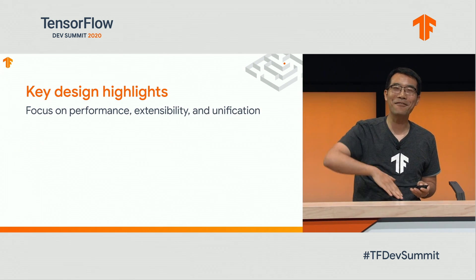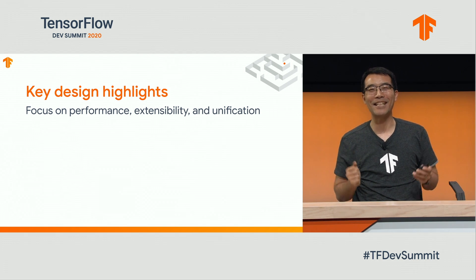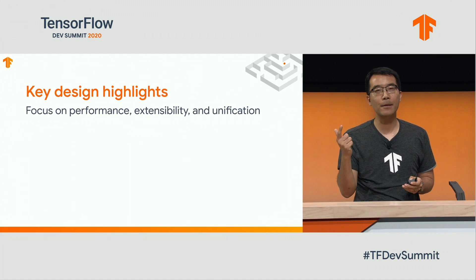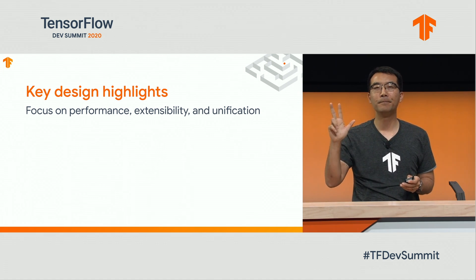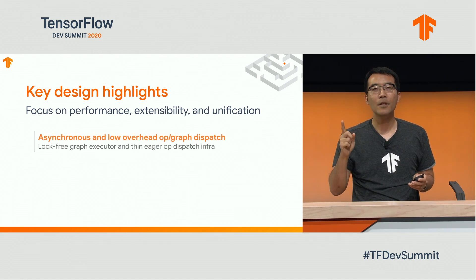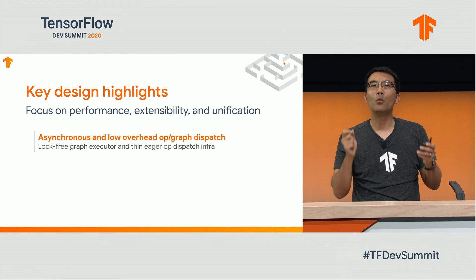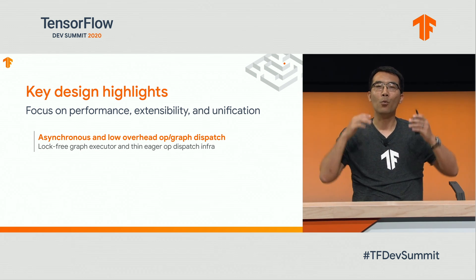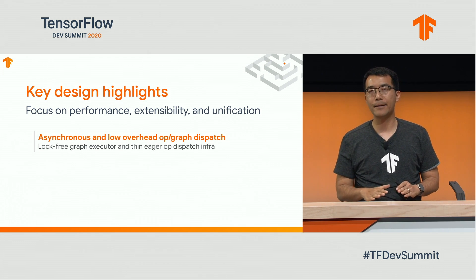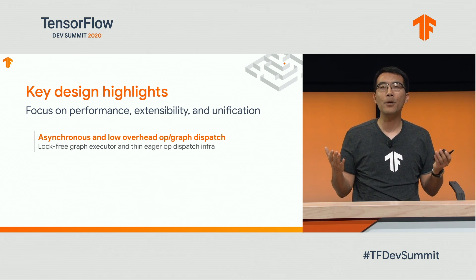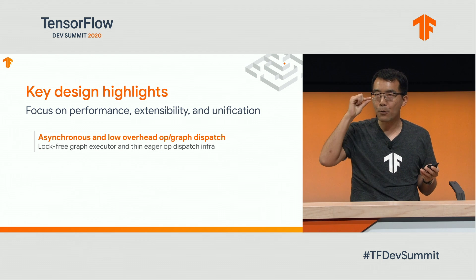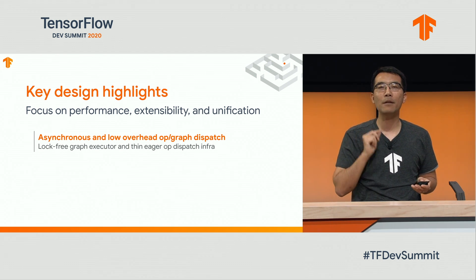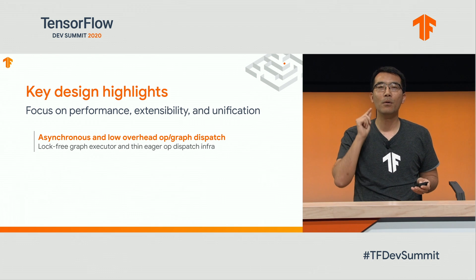Now let's dive a little more into the technical design and look at how we realize the vision of building a performant, extensible, and unified runtime. First, to achieve high performance, we built a lock-free graph executor that supports concurrent op execution with low synchronization overhead. We have also made the eager op dispatch stack very thin, and eager API calls will invoke the relevant kernels with minimal runtime overhead.